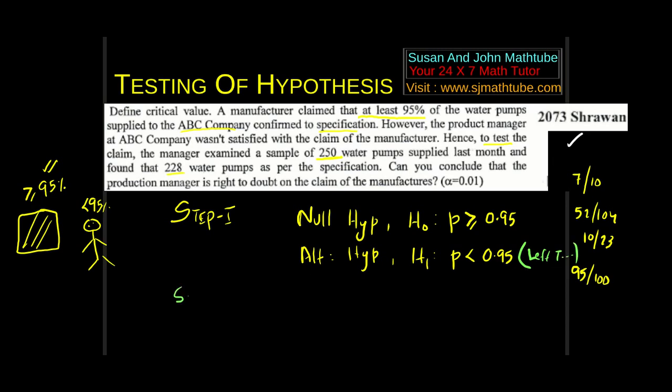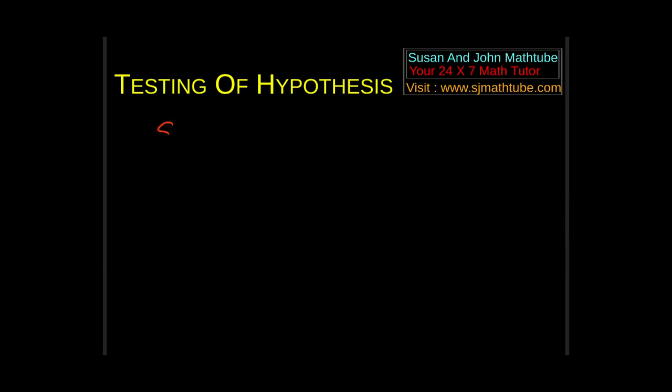Beneath that we write the alternative hypothesis. The product manager was not satisfied, and that clearly means that he is suspicious about the manufacturer's claim. That means he thinks it is less than 0.95. What should we write on the bracket? Is it two-tailed or left-tailed or right-tailed? Yeah, left-tailed. Now, step number 2.